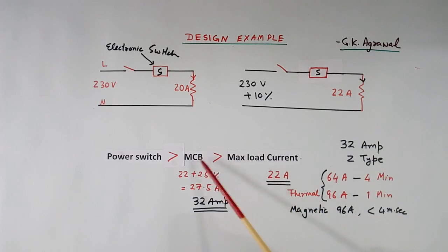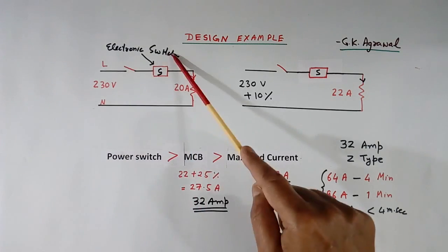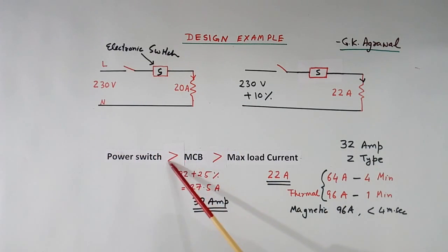So load current maximum is 22 A. MCB rating should be more than load current. And power switch rating should be more than MCB. Now load current is 20 A. Generally MCB is taken about 25% more than this. You can decide your own way. Then this current becomes 27.5 A. So MCB rating should be 27.5 A, but you will not get this rating. MCBs are made in standard currents only. Say you may get 32 A. So you will have to use MCB of rated current 32 A.